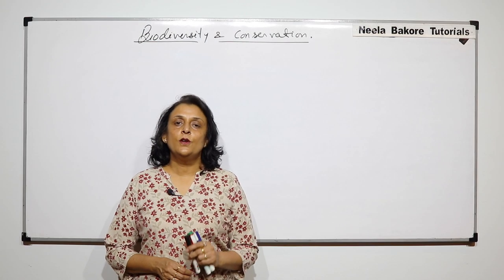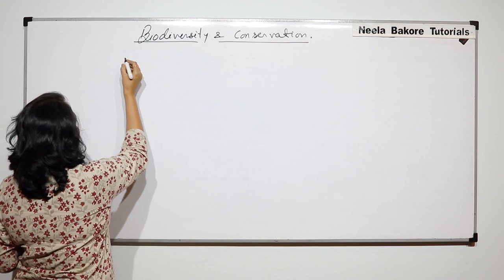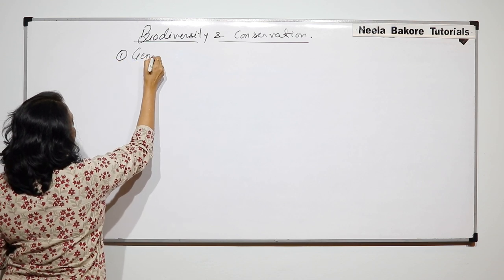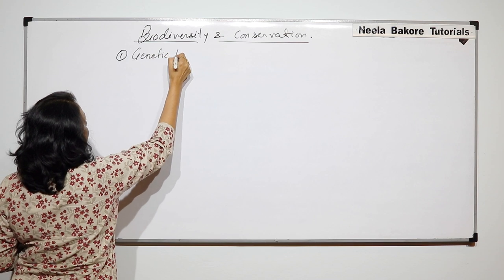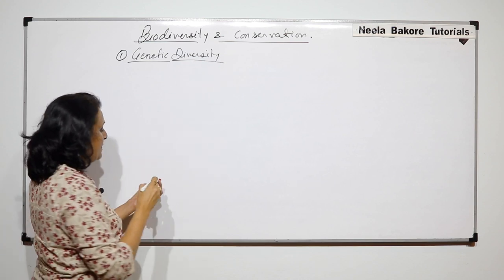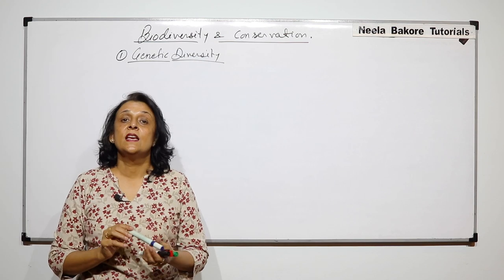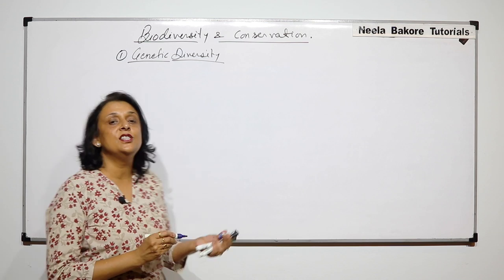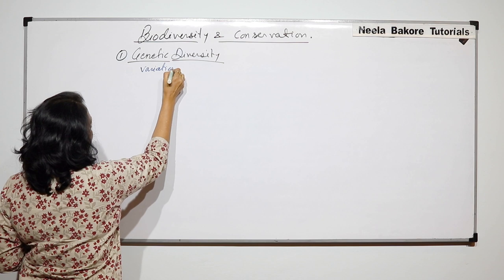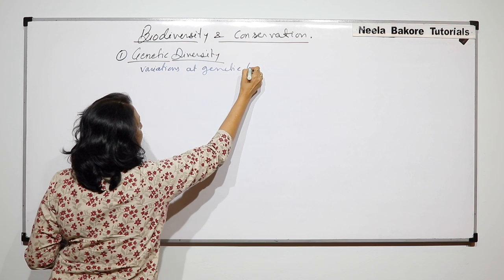In this video we'll talk about the three main levels of diversity. The first is called genetic diversity, and when we say genetic diversity, that means in a species there is variation at the gene level — variations at the genetic level.